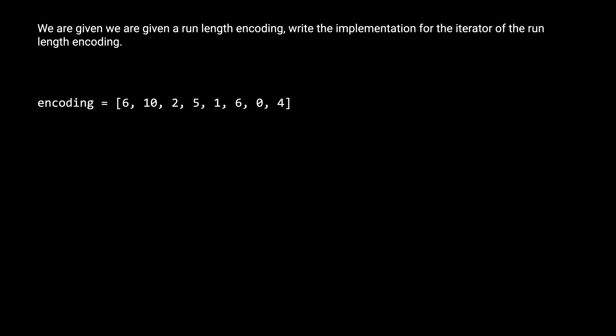A run length encoding, or RLE for short, is a compressed representation of a sequence of numbers. It alternates between the frequency of the number in the original sequence and the value of the number itself. So let's say that the encoding we are given is this — this would be the RLE for this original sequence. Let's look at the first pair of numbers in the encoding: 6 and 10. 6 represents the frequency of the second number, 10, in the original sequence. Notice that there are six 10s in the original sequence.